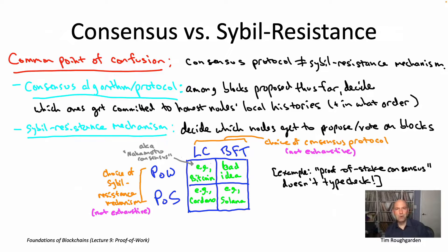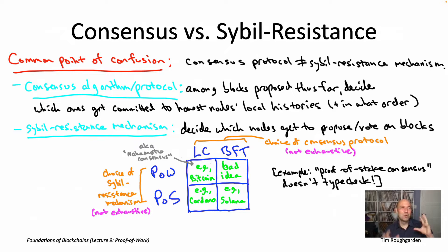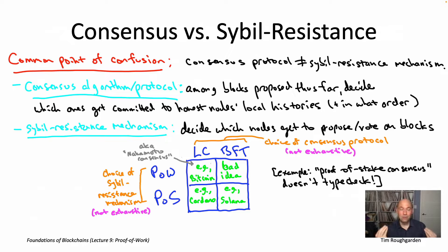Let's kick off this video with a brief review of the last thing we said in the first video of lecture number nine. I'm showing you the same slide as from the first video. You might recall that the choice of the consensus protocol and the choice of the mechanism for civil resistance are really independent decisions, and they should not be conflated.